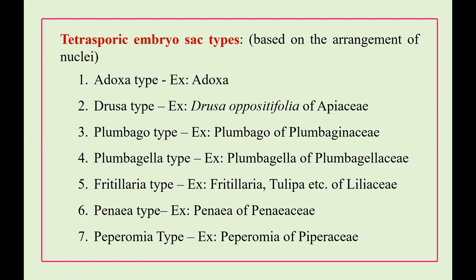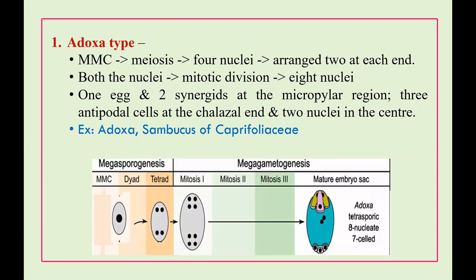The first type is adoxa-type, formerly known as lillium-type. It is characterized by all 4 megaspore nuclei undergoing just one more mitotic division to form an 8-nucleate embryo sac. In megasporogenesis, after meiosis, 4 nuclei are formed in a coenomegaspore with no cell plate formation. Only 1 mitotic division occurs — mitosis 2 and mitosis 3 are absent — resulting in the 8-nucleate condition.